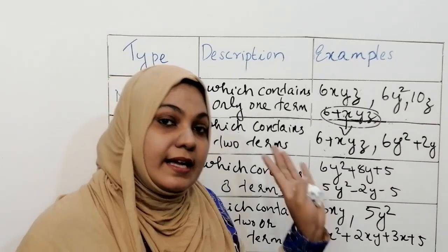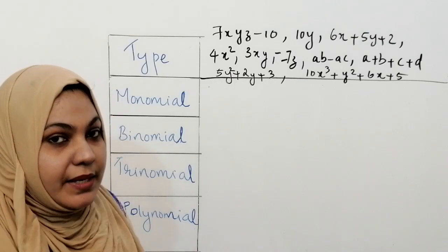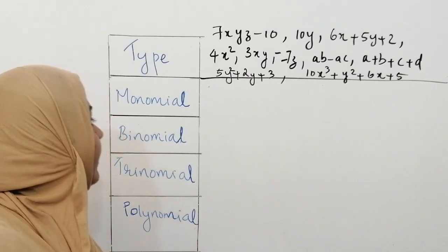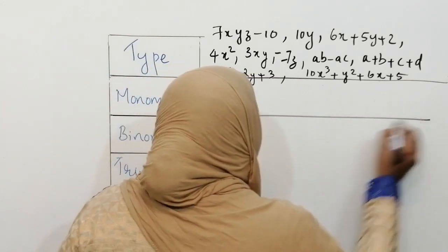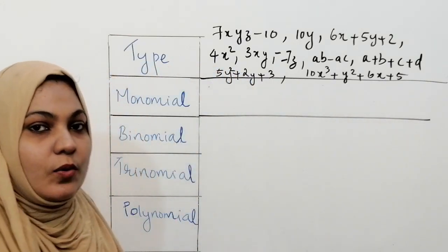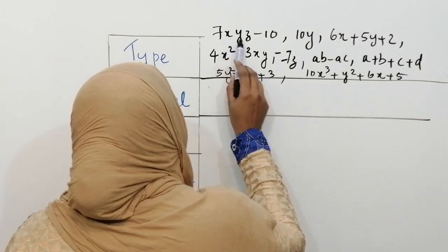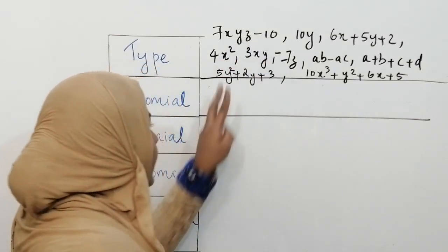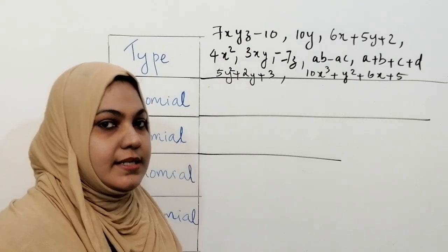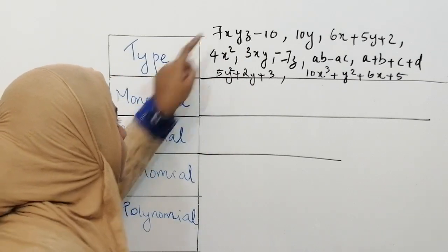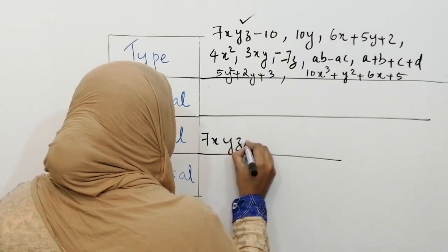Now let's solve a question related with different types of algebraic expression. You can see some examples and you have to identify which one is monomial, binomial, trinomial, and polynomial. First, 7xyz minus 10 — it has two terms separated by a minus sign, so it comes under binomial. Next, 10y — that is 10 multiplied by a variable, only one term, so it is a monomial.